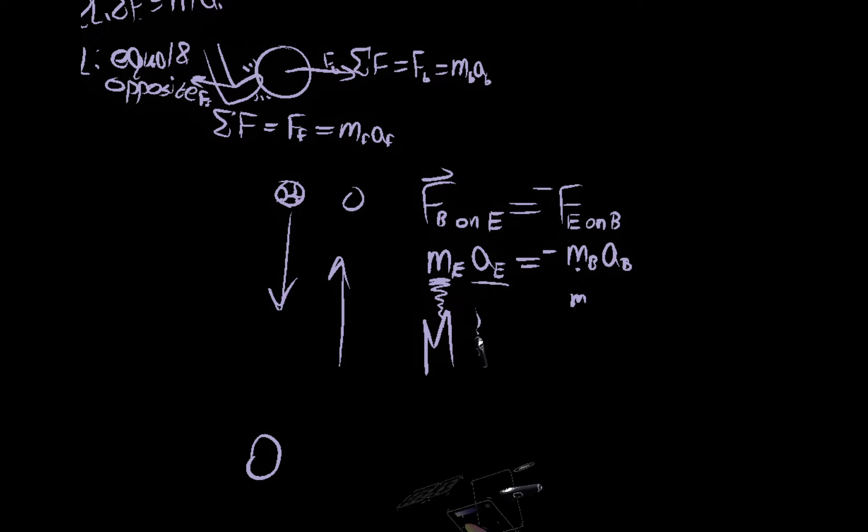So the acceleration of the earth, it's not zero. It's absolutely not zero, because the force is not zero and the mass is not infinite. So the earth does move when you bounce a ball, when you jump up and down on the ground. The earth is moving, just very, very, very slightly. It's unnoticeable. And the ball or your body moves up greater.